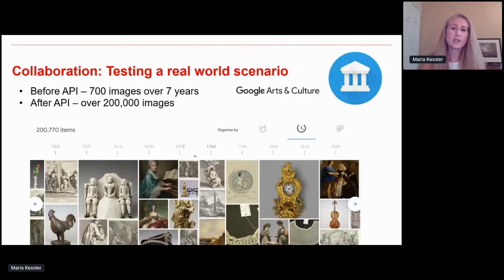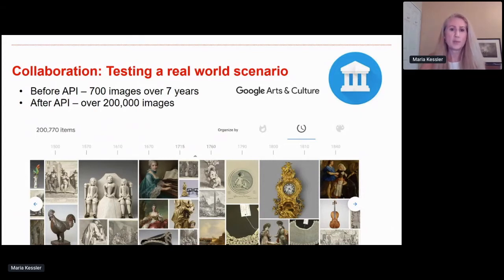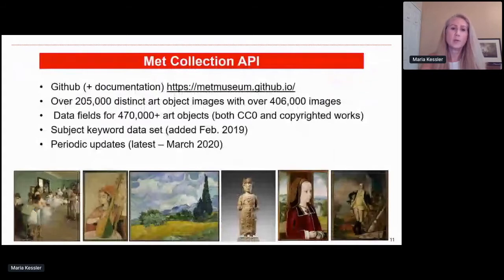Our open access program is the release of public domain images and data under a CC0 license, which waives all of our copyright claims to those works. We created this program and launched it in early 2017 with about 375,000 art objects available at metmuseum.org or in a CSV file. But it wasn't that accessible — you had to download one image or file at a time. If we were going to work with partnerships and platforms, we knew an API was our solution. So in 2018, we started building our API.